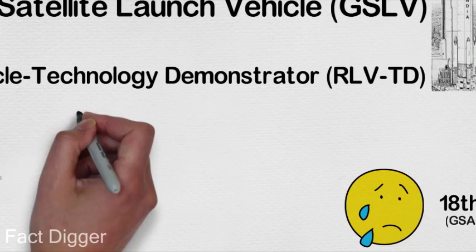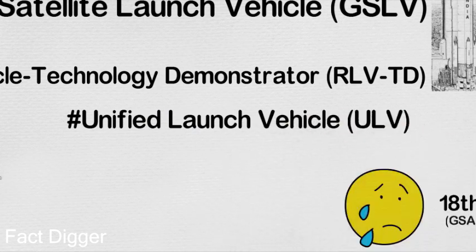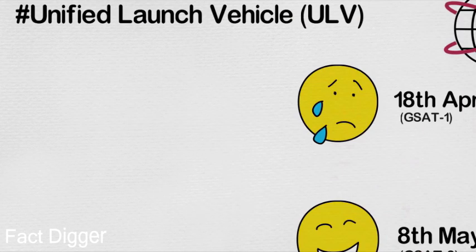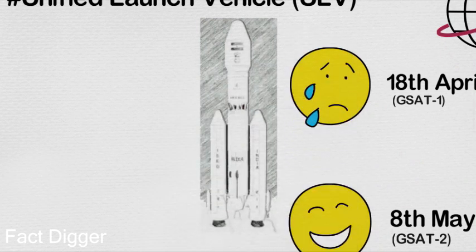Another future launch vehicle on which ISRO is working is the Unified Launch Vehicle, or ULV. The core objective of the project is to design a modular architecture that will replace the PSLV and GSLV with a single family of launchers.